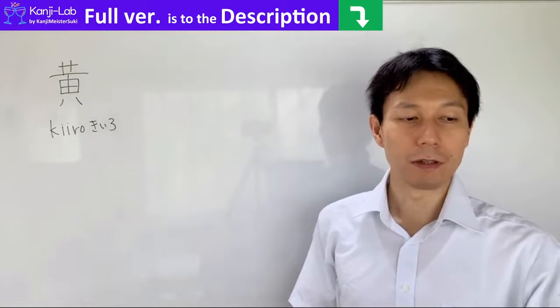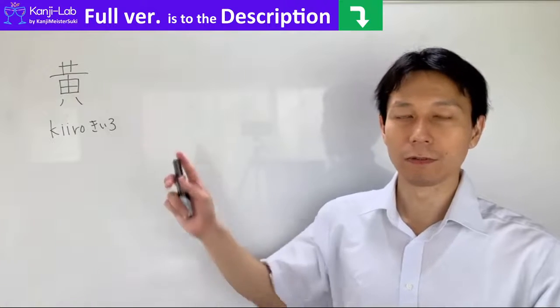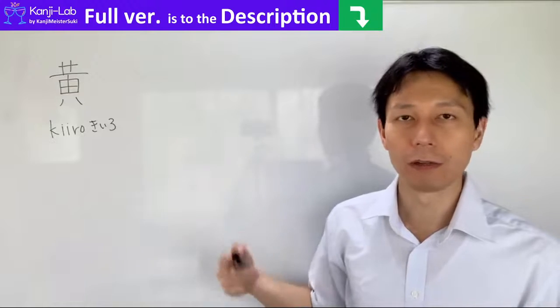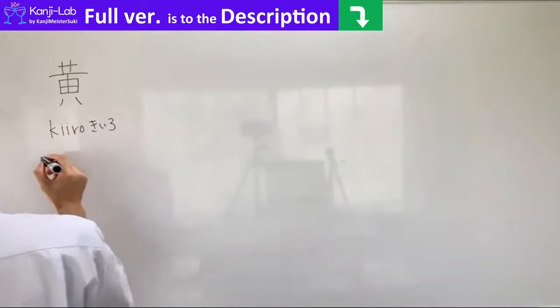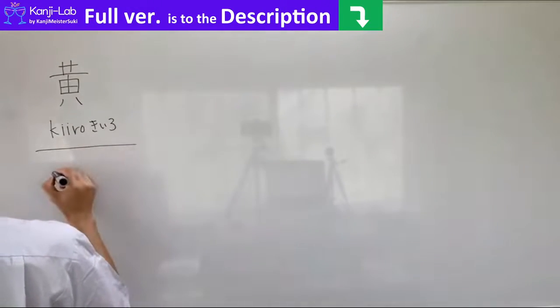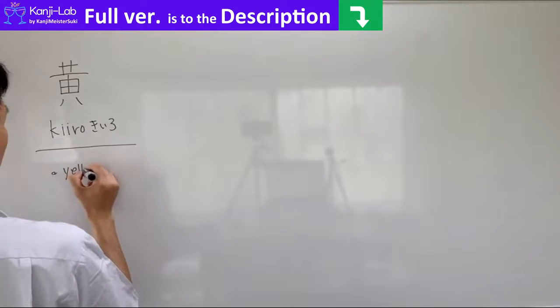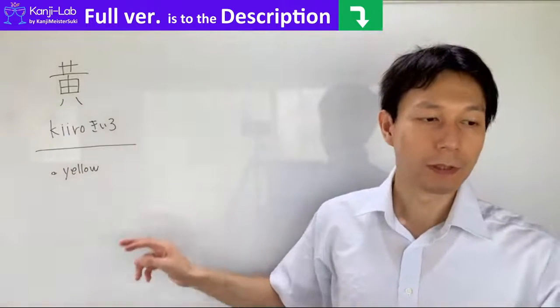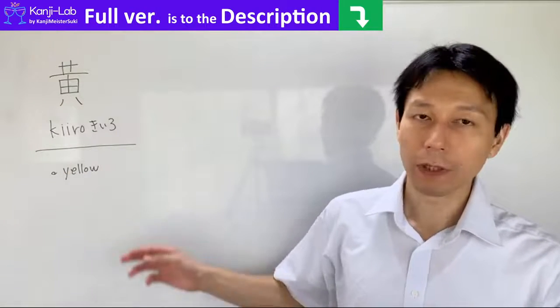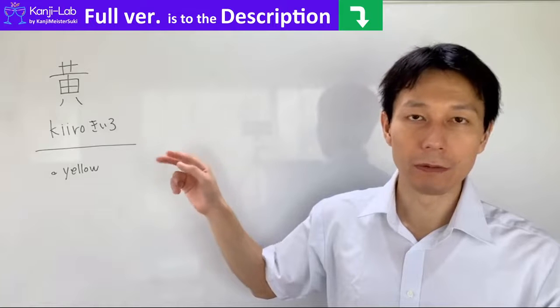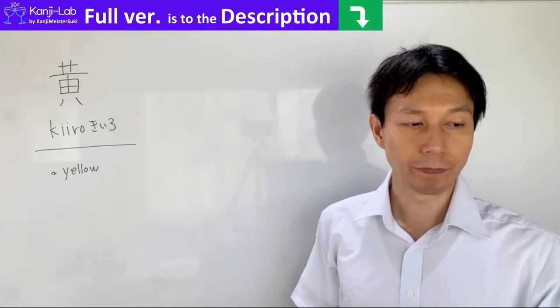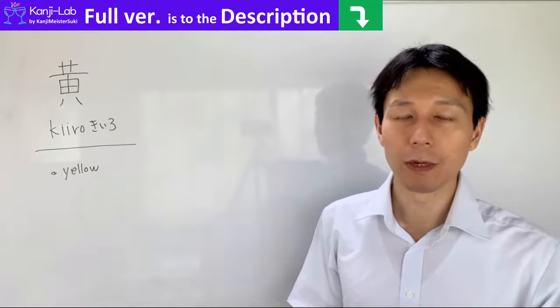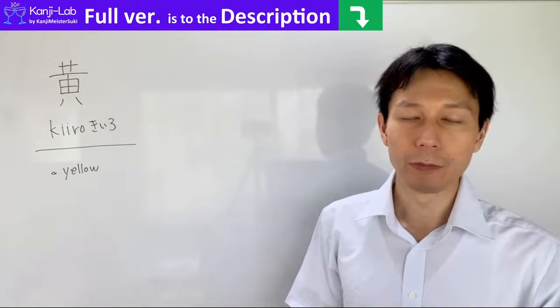Next is the meaning of the radical for Kiro. The radical Kiro represents yellow, yellow color. And from this radical, characters represent yellow or font. The origin of this radical is explained in a link in the description below.